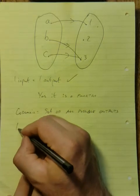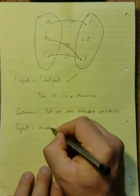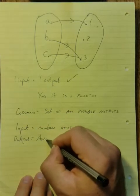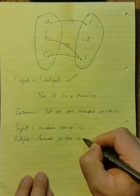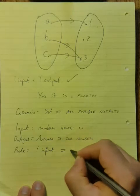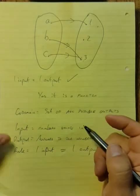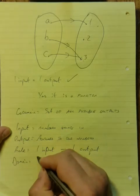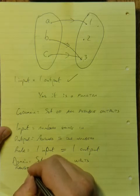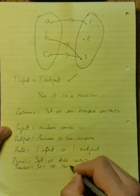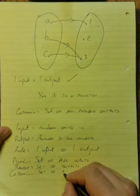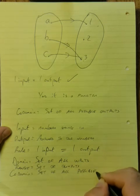In conclusion, we have our inputs, numbers going in. We have outputs, answers to our numbers. The rule, which is one input, one output. For every input, there can be only one output. We have the word domain, which is the set of all inputs. We have the range, which is the set of outputs. And then finally, the codomain, which is the set of all possible, and this is the important word here folks, possible outputs.